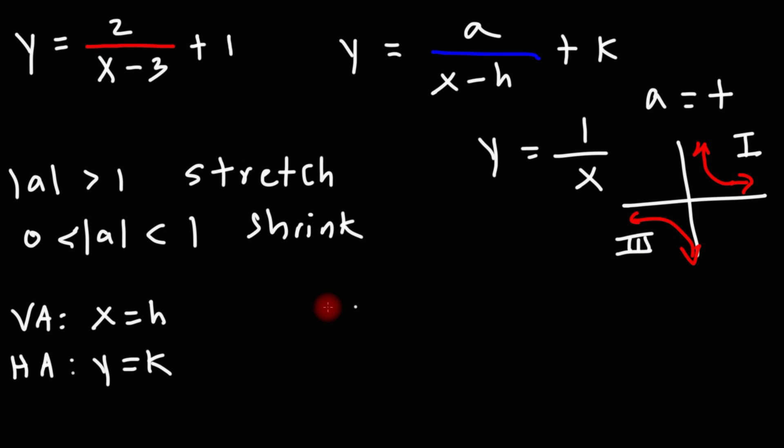Now when a is negative, let's say if we have y equals negative 1 over x, the graph will exist in quadrants 2 and 4. So this is quadrant 2, this is quadrant 4.